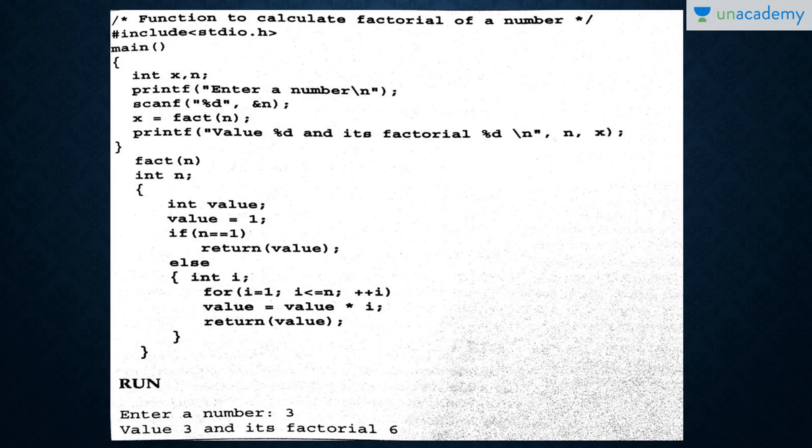Then we have the next function to calculate factorial of a number. What is factorial? Factorial means, suppose 2 factorial is 2 into 1. 3 is 3 into 2 into 1. 4 is 4 into 3 into 2 into 1. That means, it's the product of natural numbers. So what have we done? Hash include stdio.h, main starts. We have two variables declared. Then we enter a number, address of n. In x, we have fact of n. We have the factorial function. Where is it? It is here.